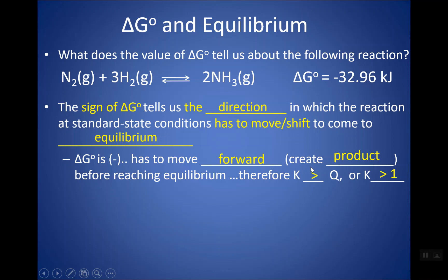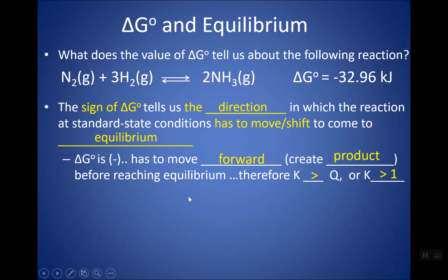We have said if you have a really large K, that means you have mostly product at equilibrium, which makes sense. Because if you're going forward to get to equilibrium, you're going to end up with more product. We can also think of it as: if Q is less than K, that must mean we are going in the forward direction so that we can raise the numerator and bring down the denominator. At standard state conditions, Q is 1, so that must mean if we're going forward, K is bigger than 1. Really what I want you to take away is the logic that anytime delta G is negative, we're going to get a pretty large K — K bigger than 1.